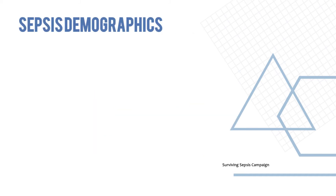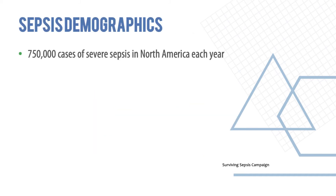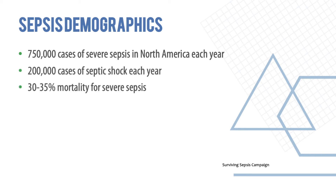Regarding demographics, there are about 750,000 to one million cases of severe sepsis in the USA each year, and about 200,000 cases of septic shock. Mortality is in the range of 30–40% for sepsis, whereas for septic shock it is higher — approximately 50%.